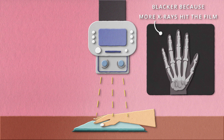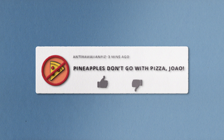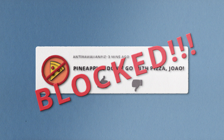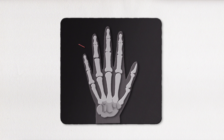They just traveled right through you — just like when I read a hate comment on YouTube, it flies right through me into the blocked bin. Your hand bones will appear white because they did absorb the x-rays, but everything surrounding your bones will appear black or gray.